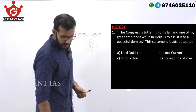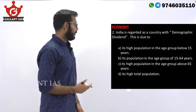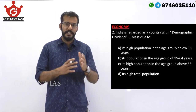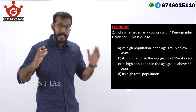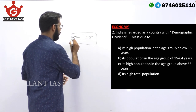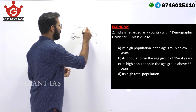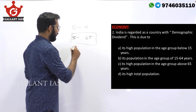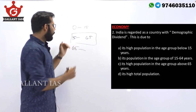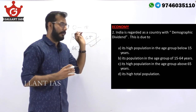Now let's move on to the next question from economy. India is regarded as a country with demographic dividend. Demographic dividend is a rise in economic growth due to an increase in the number of people within the age bracket of 15 to 65. This group of people are considered productive, while those from 0 to 15 and 65 above are considered dependent population. When the number of people between 15 and 65 increases, we say we have a demographic dividend.